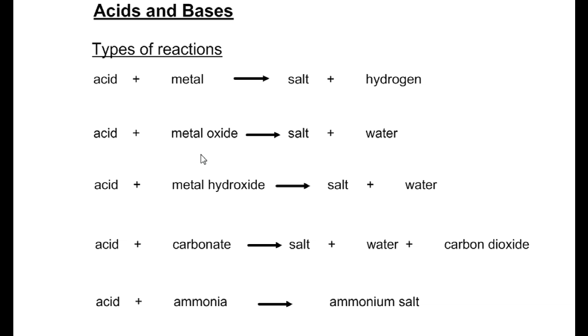When an acid reacts with a metal oxide, salt and water is produced. When an acid reacts with a metal hydroxide, salt and water is produced. Acid plus carbonate gives you salt, water, and carbon dioxide.